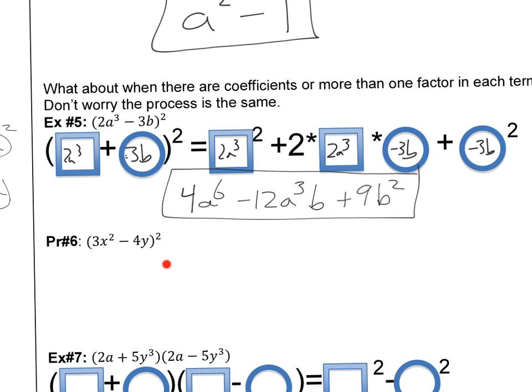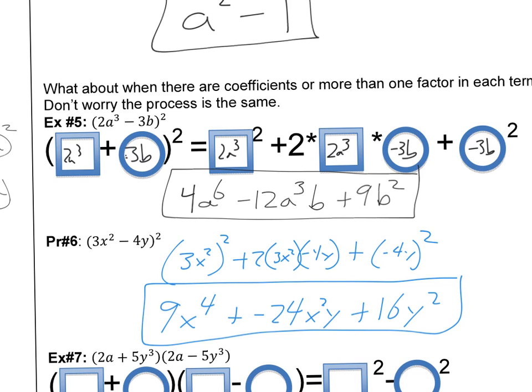Here's another complex one — go ahead and work on it, redrawing the shapes if you want. Put all the terms in the right positions of the pattern and simplify. The first term is 3x squared, so squaring it gives 9x to the 4th. Then multiplying the two terms together and times 2, and squaring the last term. The answer is 9x to the 4th minus 24x squared y plus 16y squared.